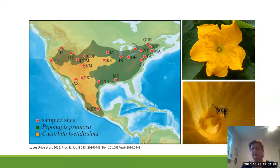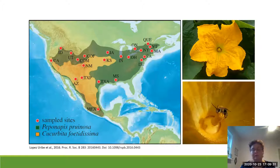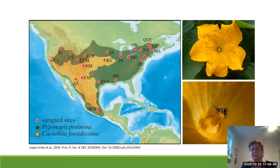Here depicted you can see a cultivated Cucurbita flower. This is a male staminate flower, which is the flower that bears the pollen. And below it you can see a male hoary squash bee clinging to the synandrium in the middle of the flower. The synandrium is the part consisting of fused anthers that bear pollen.